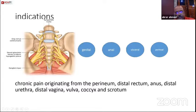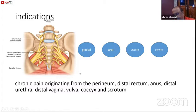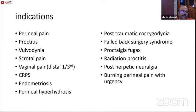Coming to the indications of ganglion impar block: basically, there is chronic pain arising from the genital, anal, visceral, or perineal region. The afferents coming from the perineum, distal rectum, anus, urethra, vagina, vulva, coccyx, and scrotum. If there is chronic intractable sympathetic discomfort in this region, you can try ganglion impar block. There is a whole list of distinct indications: perineal pain, proctitis, vulvodynia, scrotal pain, vaginal pain, complex regional pain syndrome, and endometriosis.